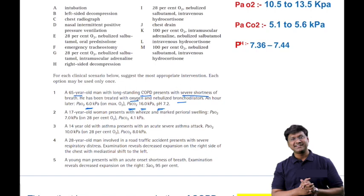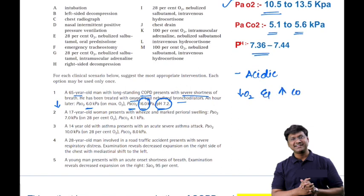Analyzing the values: the pH is acidic — normal is 7.36 to 7.44, but this patient has 7.2. PaO2 is reduced; normal PaO2 is 10.5 to 13.5 kilopascals. PaCO2 is around 16 kilopascals — normal is 5.1 to 5.6. So the individual has acidic pH, hypoxemia, and hypercapnia, which is suggestive of respiratory acidosis secondary to COPD — type 2 respiratory failure.